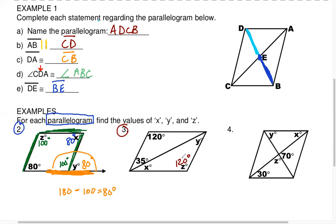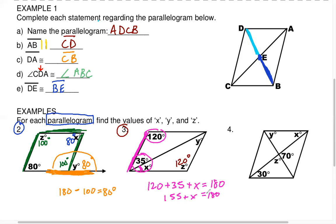What do we know about consecutive angles? Going this way, this angle plus this whole corner has to equal 180. So we have 120 degrees plus 35 plus the unknown piece X — all together equal 180. So 120 plus 35 is 155, plus X equals 180. 180 minus 155 is 25, so X is 25 degrees.